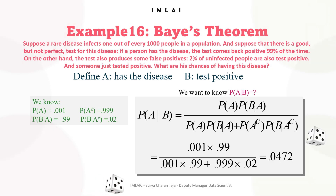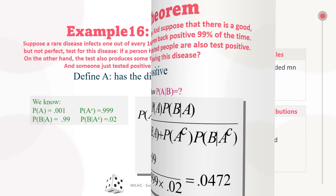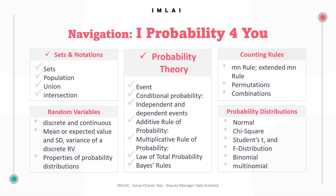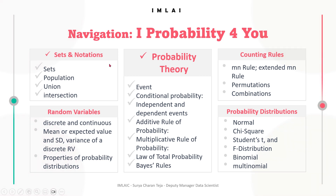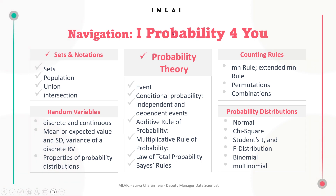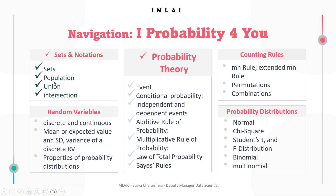With this, it's a big wrap for probability theory. Let's get into our navigational map of intuitive probability for the course and see where we are. So far, we have subdivided this whole course into subsections, and one of them is sets and notations — which are now done.